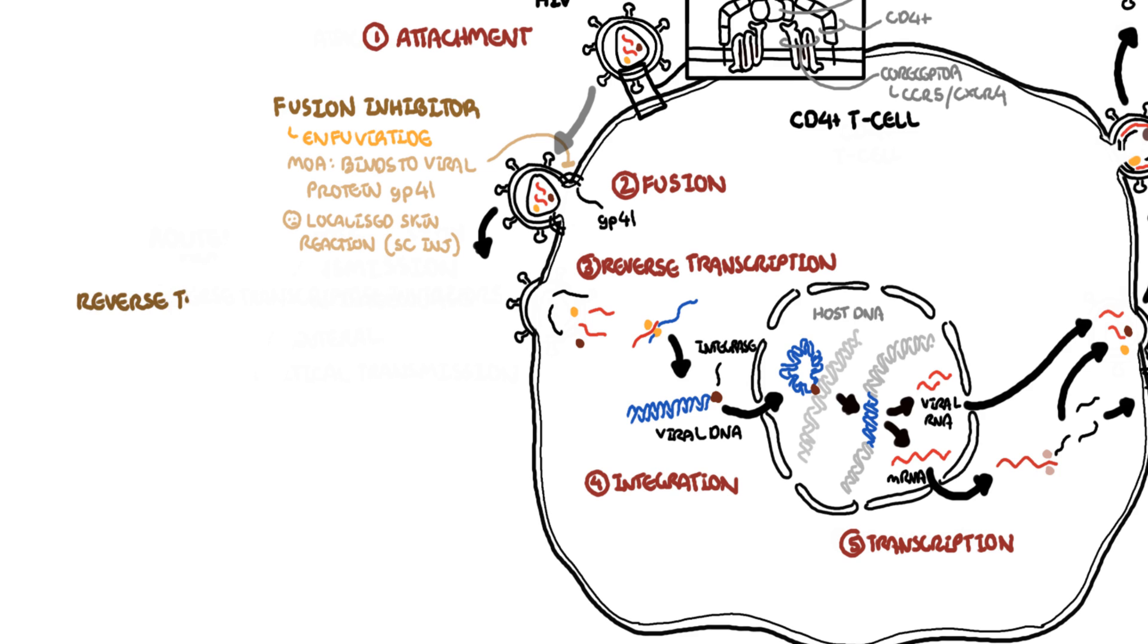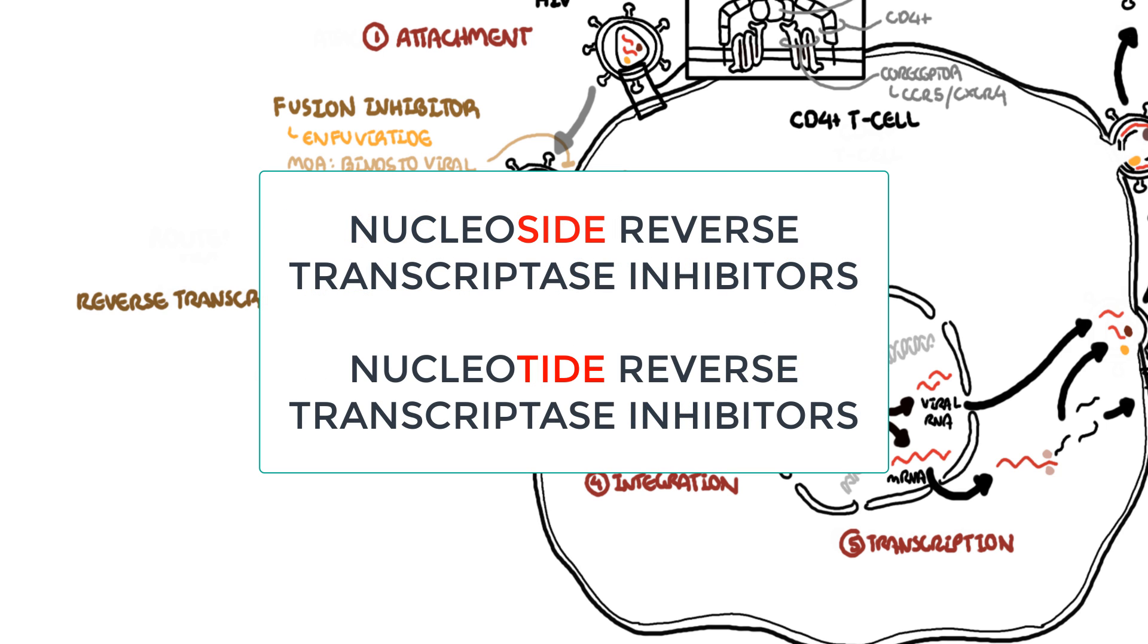Then you have the antiretrovirals that target reverse transcription. Most of these drugs end in INE, except two very important reverse transcriptase inhibitors, abacavir and tenofovir, which you have to know. Now the two main types of reverse transcriptase inhibitors are the nucleoside reverse transcriptase inhibitors and the nucleotide reverse transcriptase inhibitors.